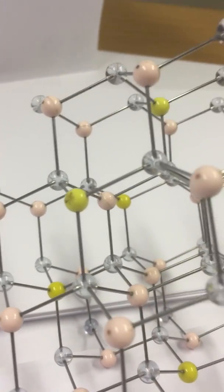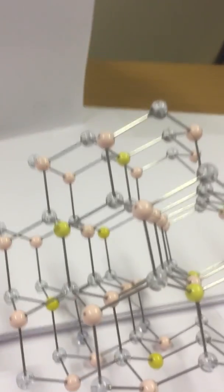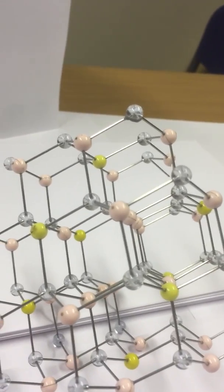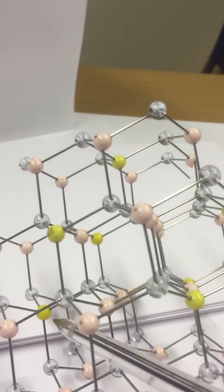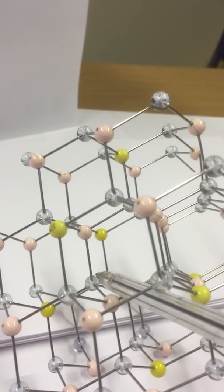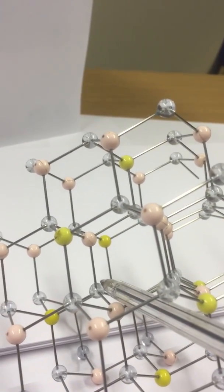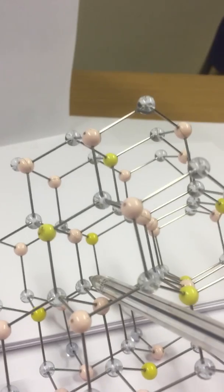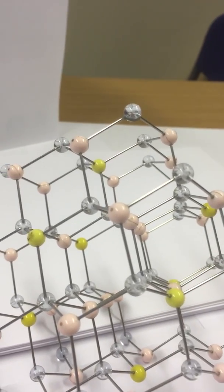this direction is pointed along the diagonal of the unit cell. So if we thought about this atom here, this atom here, and the atom at the opposite corner of the unit cell here,